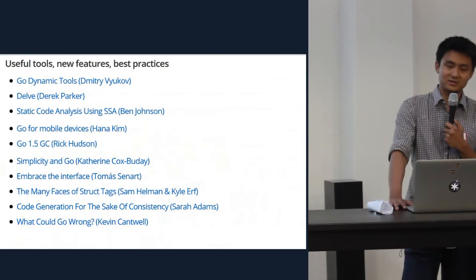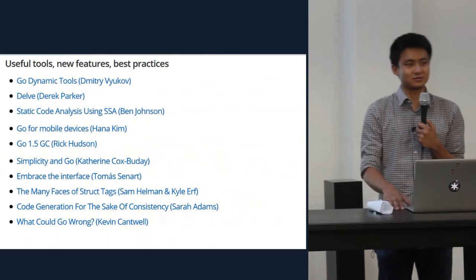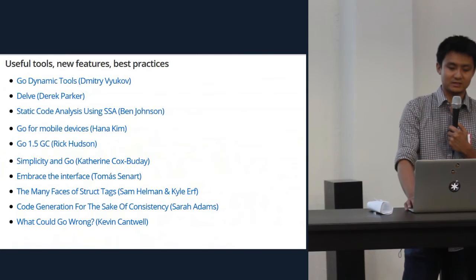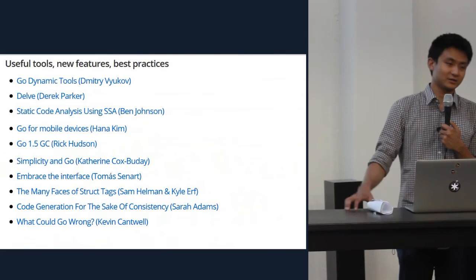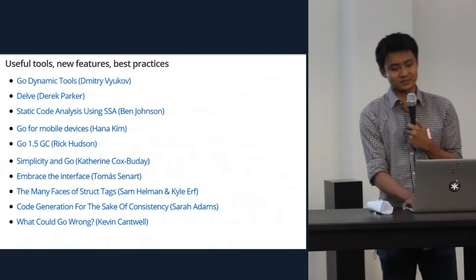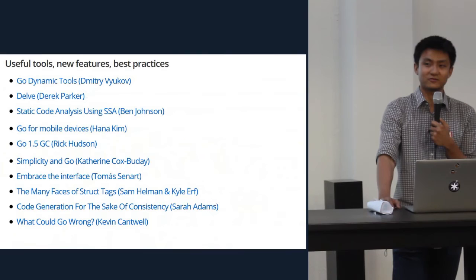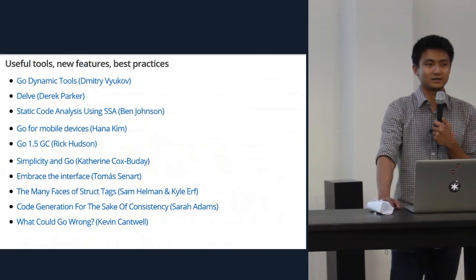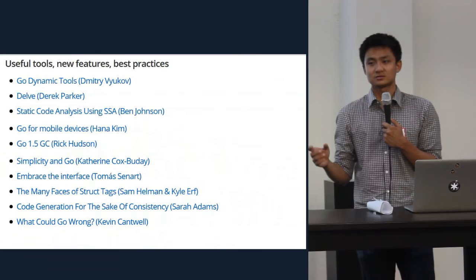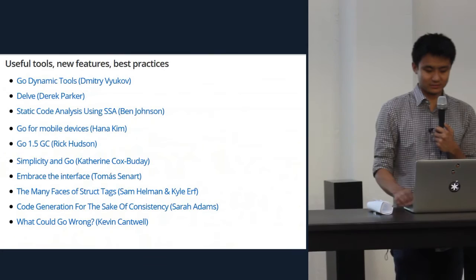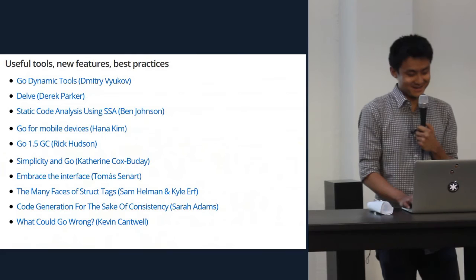Hana Kim talked about Go for mobile devices — you can now write Go and have it cross-compile down to iOS and Android, which is awesome. Rick Hudson had a really interesting talk about redesigning the Go garbage collector in version 1.5 to be more than two orders of magnitude smaller in GC pauses, with very little trade-off in overall performance. Of course there was Brad Fitzpatrick's talk about generics in Go 1.6 — just kidding, that wasn't the actual talk.